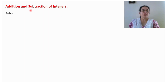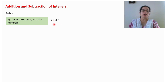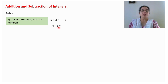The next topic is addition and subtraction of integers. Here we follow a few rules to make our work easy. First: if signs are same, add the numbers. Here signs are same — 5 doesn't have any sign, it means it is positive 5 — signs are same, add the number, this is 8. Signs are same, add the number, 6 plus 4 will give you 10.